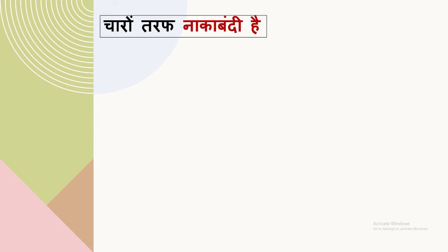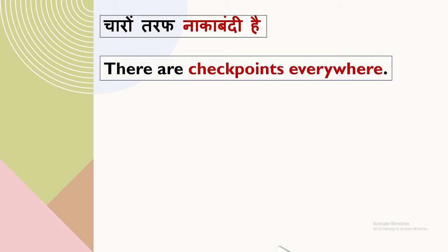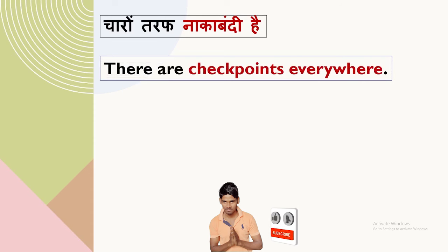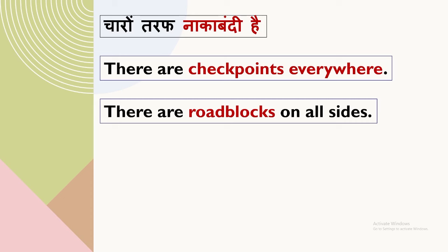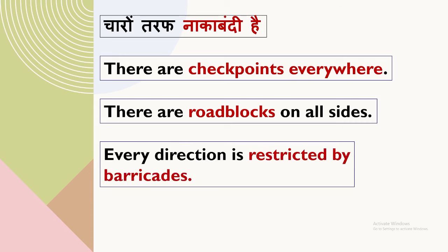It means that all the paths are closed. Can you try to make this sentence in English? There are checkpoints everywhere. There are roadblocks on all sides. Every direction is restricted by barricades.